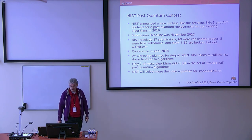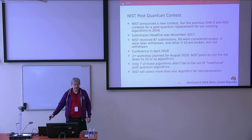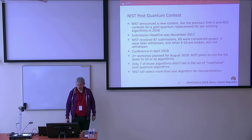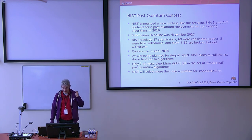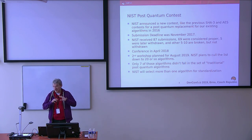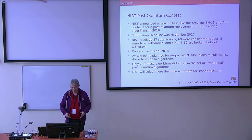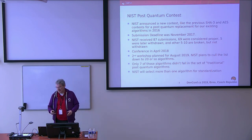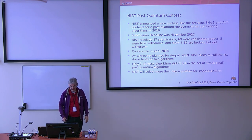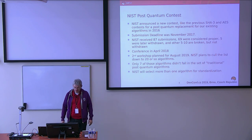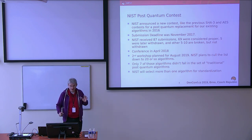NIST announced this contest in 2016. The submission deadline was November 2017, so all last year they've been evaluating submissions. NIST got 87 submissions, of which 69 were properly formatted — that is, they had all the right criteria met: an algorithm, an implementation, and all the right descriptions and documentation. Of those 69, five were broken and later withdrawn. Another four or five are broken but the teams have not withdrawn them yet. There was a conference in April 2018 where everybody presented their algorithms.